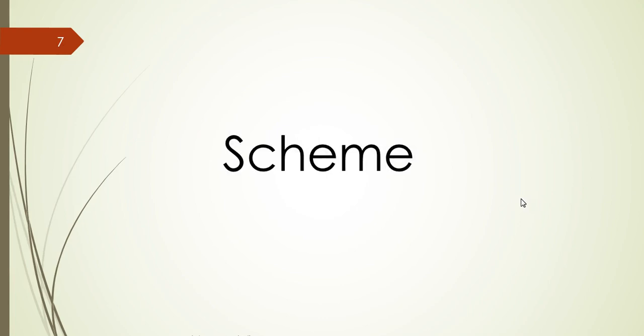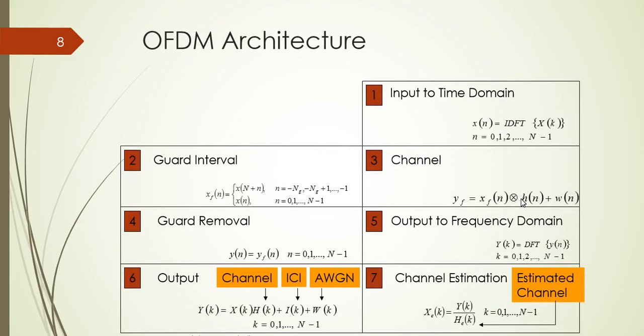So let's take a look at the OFDM architecture. In here, we have some steps in order to simulate an OFDM communication system. The first one is we have an input to time domain. And the second one is we insert some guard interval, that is, the cyclic prefix that we just saw. So it prepends the last part of the signal to the beginning of the signal. The third one is we have a channel, which is the signal with the system's convolution and plus some AWGN noise. And the fourth step is when it reaches to the receiver side, we need to remove the guard interval. And then output to a frequency domain, which is the inverse procedure of the first step.